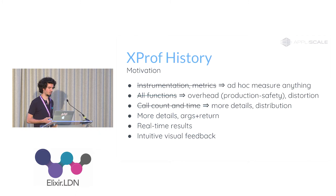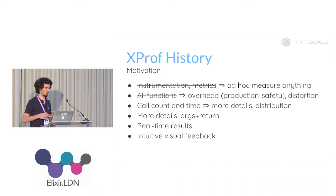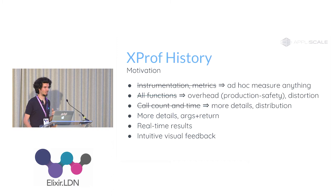F-Prof also only gathers call count and average duration of functions. We needed more details, like some kind of distribution of durations — high percentiles and maximum values. We also wanted to see for at least some function calls the actual arguments and return value. And F-Prof only gives results after a measurement period, outputting a huge Elixir term that's very hard to digest. We wanted continuous results, like a monitoring system updated every second, with intuitive visual feedback.